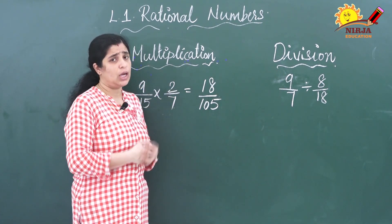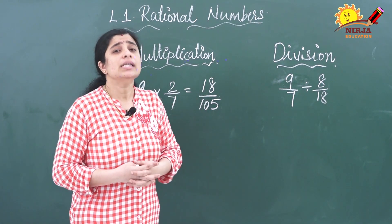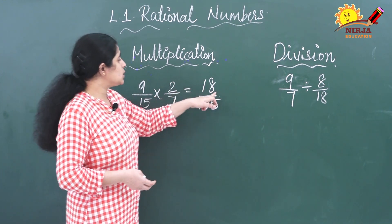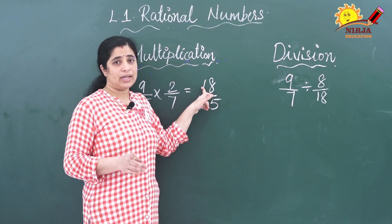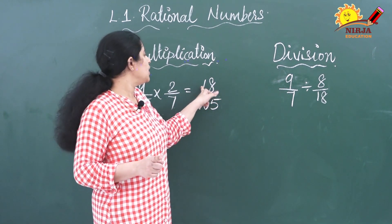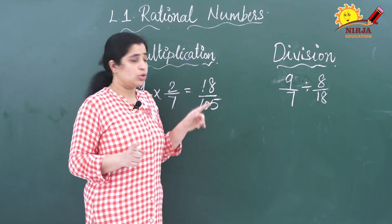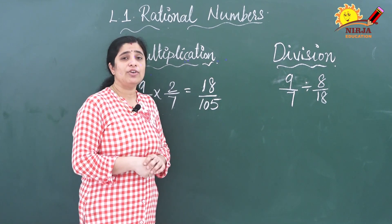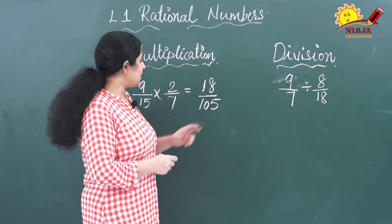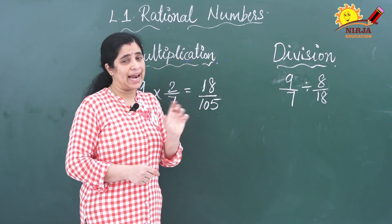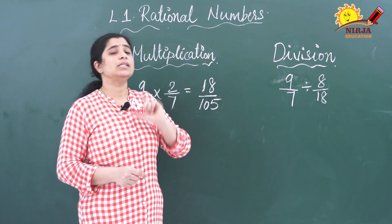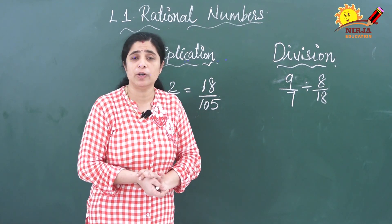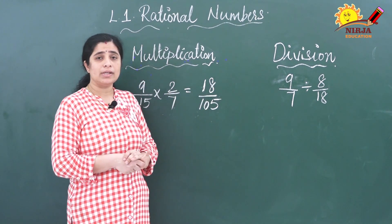Now you have to see whether you can convert this into standard form. The numerator is 18, which is divisible by 2 and also by 3, because 8 plus 1 equals 9. Now 105 is not divisible by 2, but 5 plus 1 equals 6, which is a multiple of 3, so 105 is also divisible by 3. So you can divide both numbers by 3.